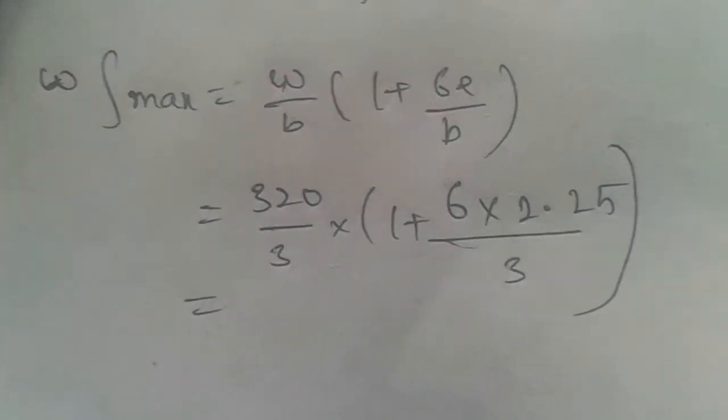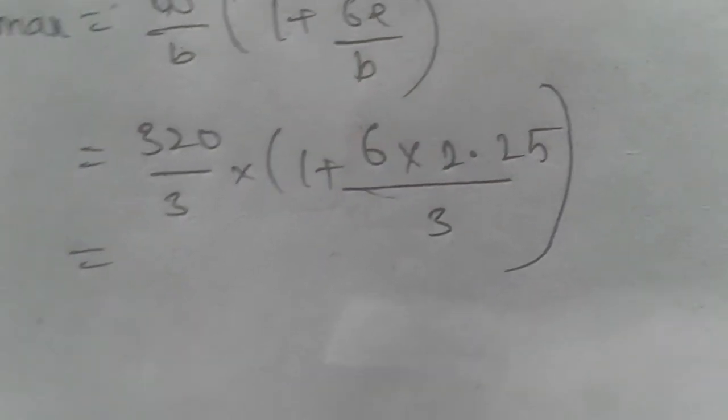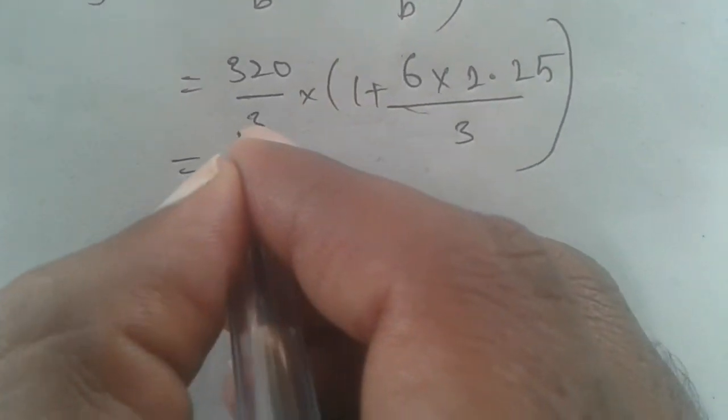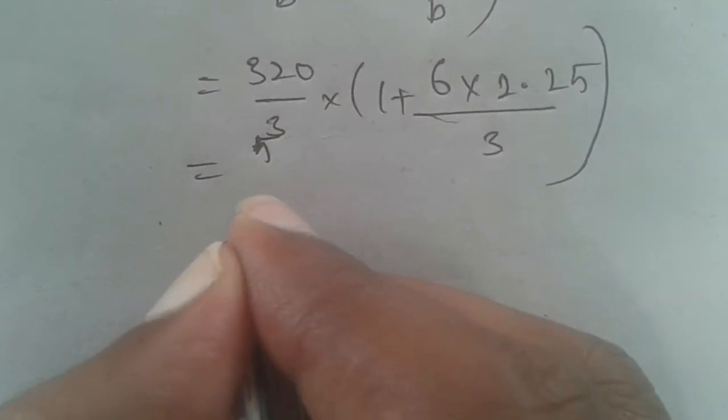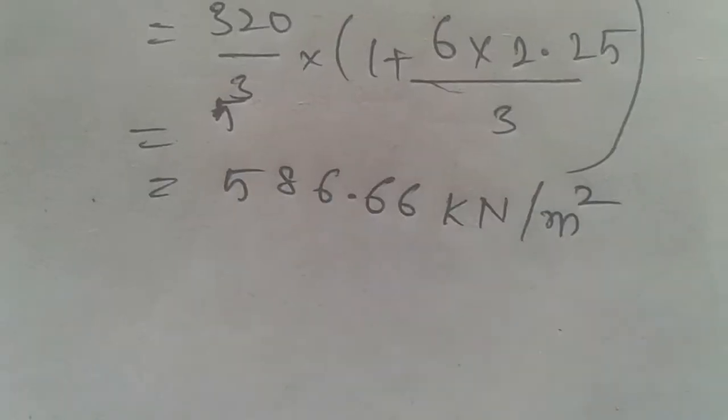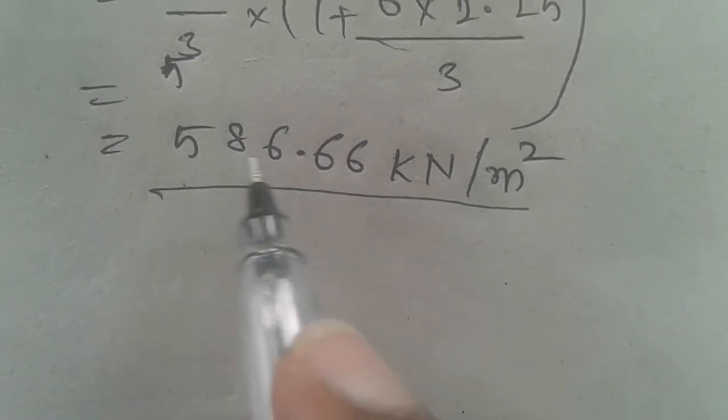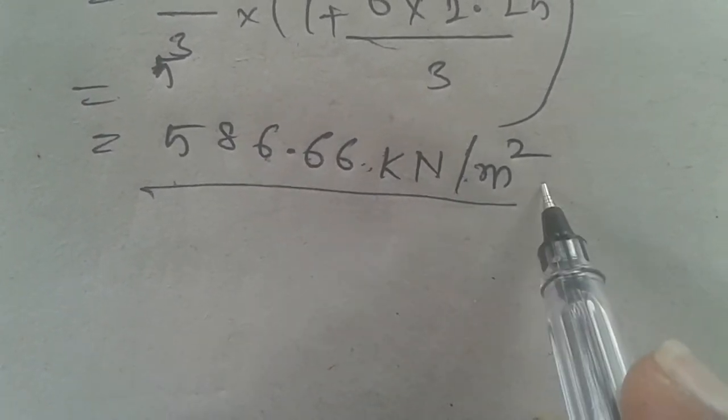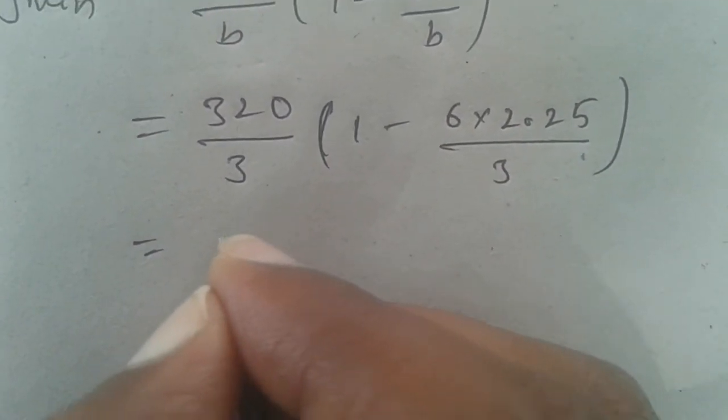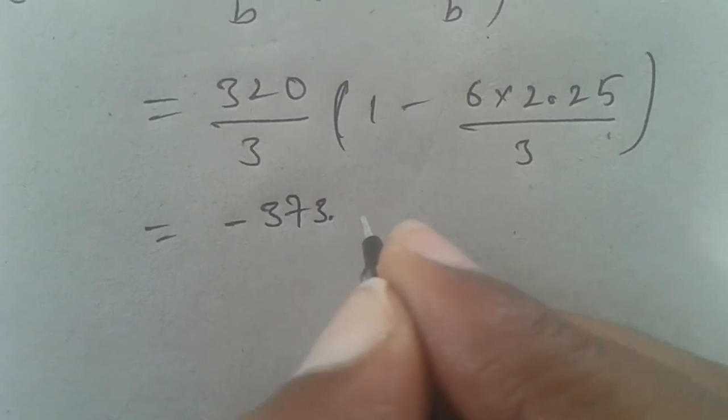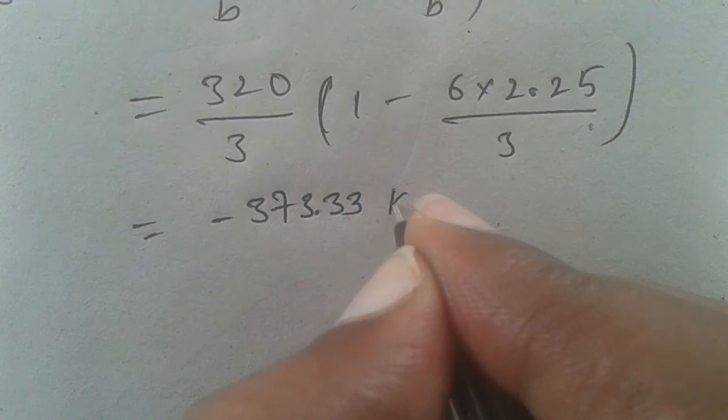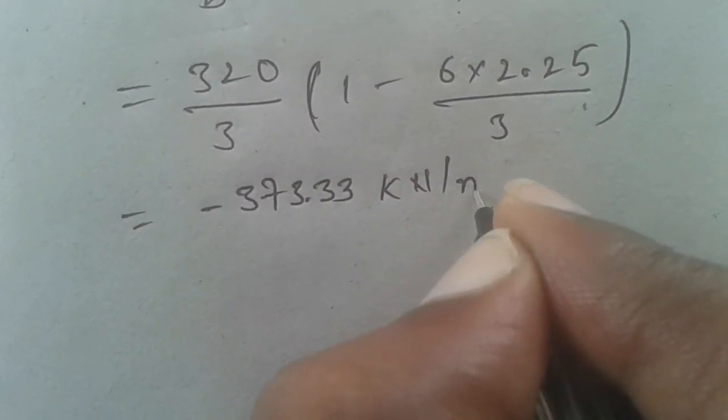Plus 6 times e by B. Putting the values: 320 by 3 times 1 plus 6 times 0.25 by 3, we got the value 186.66 kilonewtons per meter square for maximum stress and minus 37.33 kilonewtons per meter square for minimum stress.